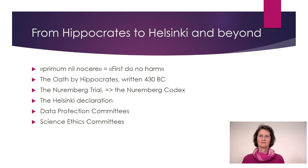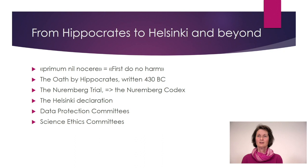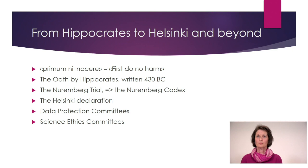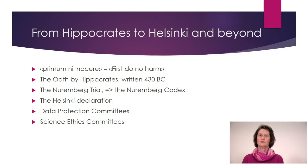Then came World War II, and German physicians were somehow led to do things that were not good from an ethical point of view. They were taken to court in Nuremberg in August 1947, and 23 German physicians got the verdict of being guilty of war crimes and crimes against humanity — guilty of reckless experiments on human subjects, among other prisoners and disabled. The trial led to the Nuremberg Code, consisting of 10 principles.